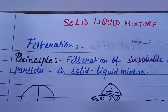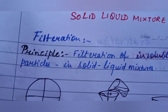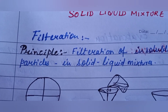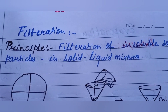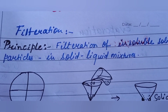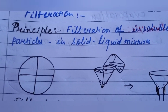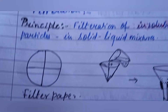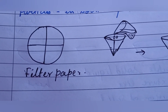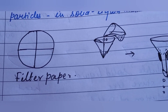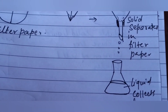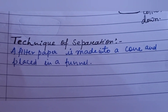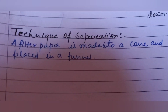Solid-liquid mixtures are separated by three methods: filtration, evaporation, and sedimentation and decantation. Filtration is used when there are insoluble solid particles mixed in a liquid, like chalk in water. The filter paper is made into a cone and placed into a funnel to carry out the separation.